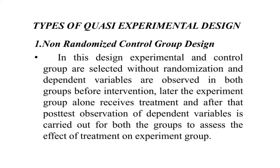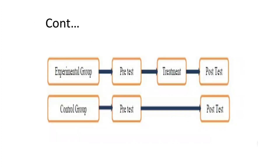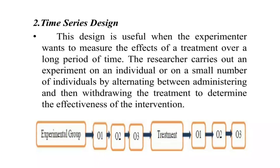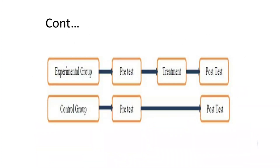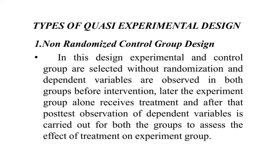Moving on to the Types of Quasi Experimental Research Design, there are two types: one is Non-Randomized Control Group Design, and another one is Time Series Design. In Non-Randomized Control Group Design, the name itself makes it well understood that randomization is absent.